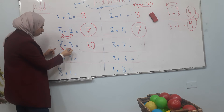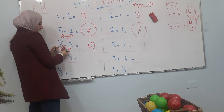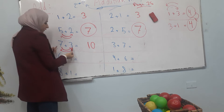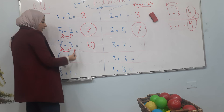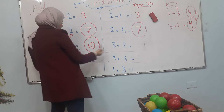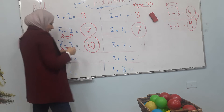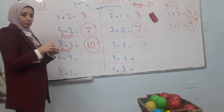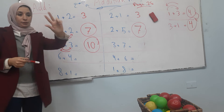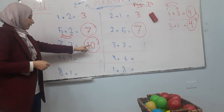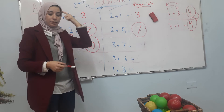لو أنا عكست الأرقام، وخليت three بالأول وseven بالآخر — هل النتيجة تتغير؟ لا. Seven plus three is ten, حطينا seven in my head وعدّينا: eight, nine, ten.